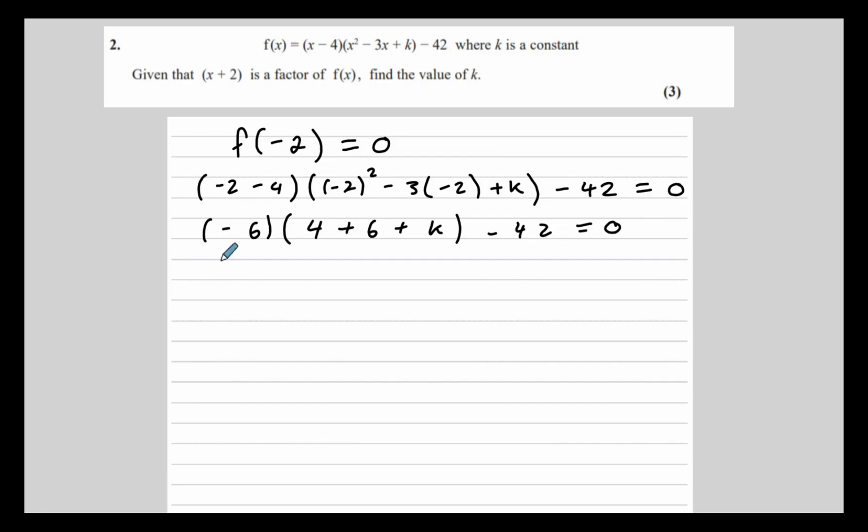Expanding the bracket: -6 times 10 is -60, -6 times k is -6k. So we have -60 - 6k - 42 = 0. Combining the constants, -60 - 42 is -102, so -102 - 6k = 0.